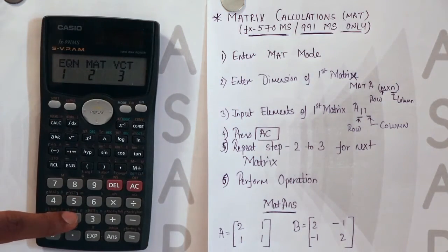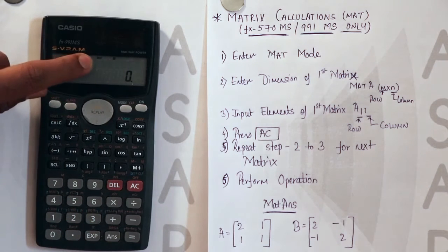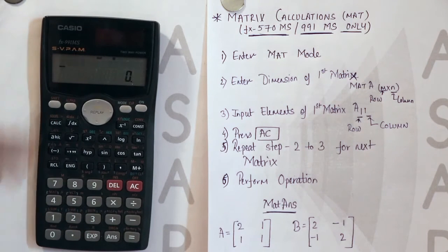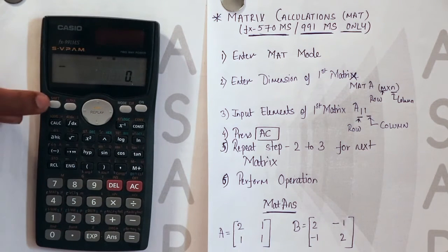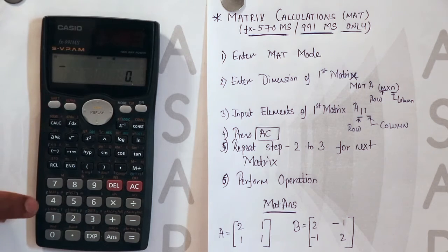This is the short form they have used for matrix. You press the button 2. Now here you can see on the display mat is displayed. That is we have entered the matrix mode. Now you press the shift button. Then you press the 4 button where you have mat written.